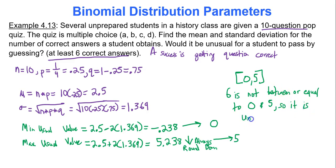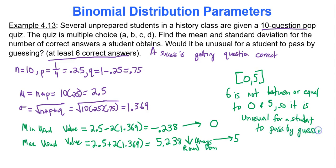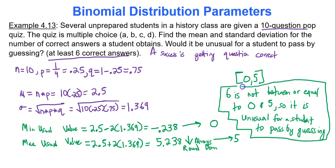It is unusual for a student to pass by guessing, because passing means getting at least 6 questions correct. So if you're one of the ones who takes a 10-question multiple choice quiz and passes it all from guessing, good for you — that means it's your lucky day. Six is not in that spread of usual values; therefore, it is unusual for a student to pass by guessing. That's all I have for you for now.